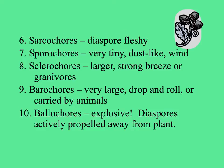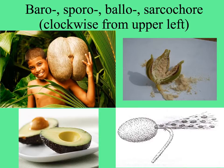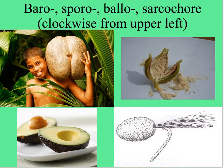Last of all is a cool category — the balocores — which are explosive, where the diaspores, fruits, or seeds are actively propelled away from the plant. At the upper left is the Coco de Mer, the largest seed known — it's a palm. On the upper right is the fruit of an orchid with very many tiny dust-like seeds. On the lower left, a sarcocore — an avocado fruit with a seed in it. On the right is a drawing of the squirting cucumber, ecbalium. When it's ripe and the fruit is touched, it is released from the peduncle and spurts away, spewing out seeds in its path.